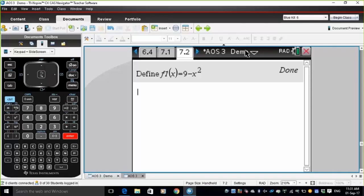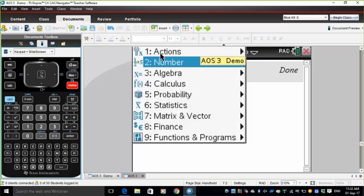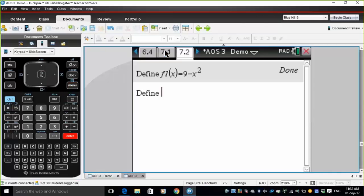is just 2 times x times that function. So let's go menu, actions, define f2 of x equal to 2 times x times the function f1 of x.